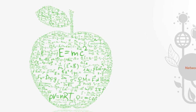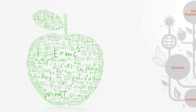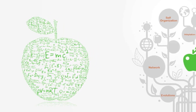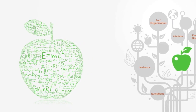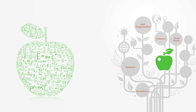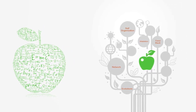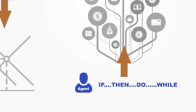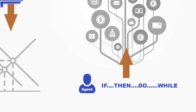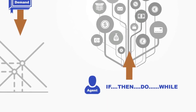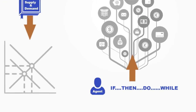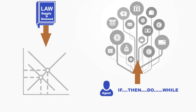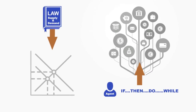Whereas traditional reductionist science primarily uses linear mathematical models and equations as its theoretical foundations, complexity science uses the concepts of complexity theory such as self-organization, network theory, adaptation and evolution. This new theoretical framework is combined with new methods such as agent-based modeling. As opposed to describing phenomena in terms of laws of nature encoded in equations, agent-based modeling takes a more bottom-up approach, describing them as emergent phenomena of local level interactions of agents that are governed by simple rules.